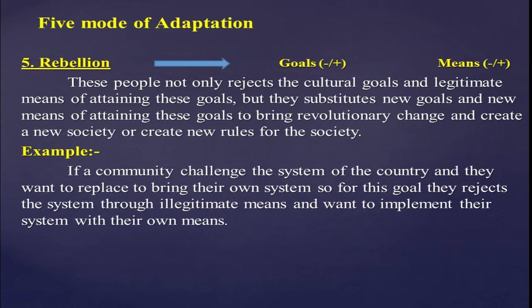Now let's discuss rebellion. Rebels first reject the existing goals and then create their own new goals. They also reject the legal means and give birth to their own means — which they justify, but which the state does not consider legitimate. These are revolutionists who challenge society and the state, reject the existing system, and try to implement their own system. They not only reject the cultural goals and legitimate means but substitute new goals and new means to bring revolutionary change and create a new society.